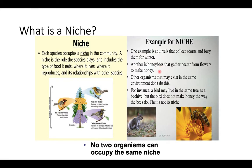Another example is honeybees that gather nectar from flowers to make honey — and also serve as pollinators. That's their niche. Other organisms that exist in the same environment don't do this. This means that no two organisms can occupy the same niche. For instance, a bird may live in the same tree as a beehive, but the bird does not make honey the way the bees do.